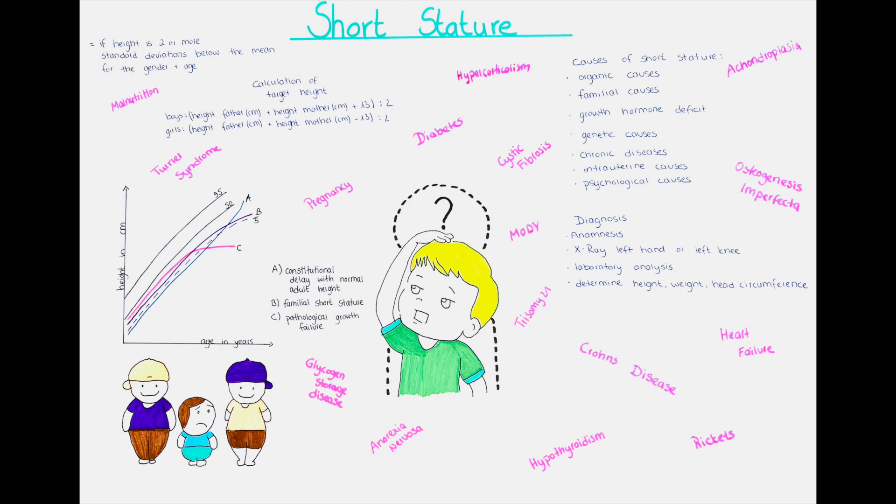The next group of causes is the constitutional delay in development. This is the second most frequent cause for short stature, especially in boys. Here usually the growth is slowed down and the puberty occurs rather late. The development is normal, just a little bit slower, but in the end, towards the adult age, the child will still reach a normal end height. Usually this is also familial, so a family anamnesis is important to take.